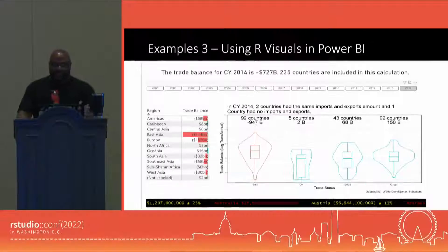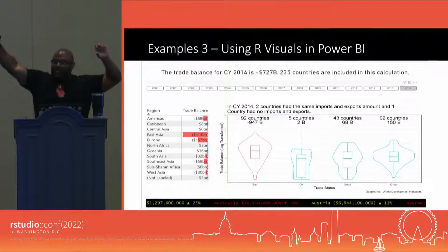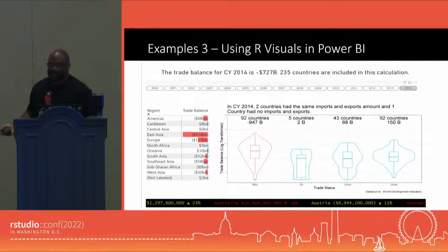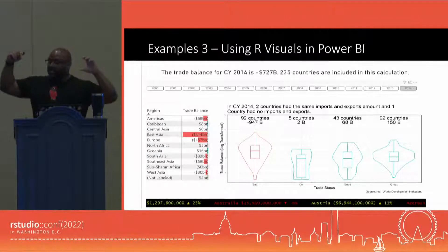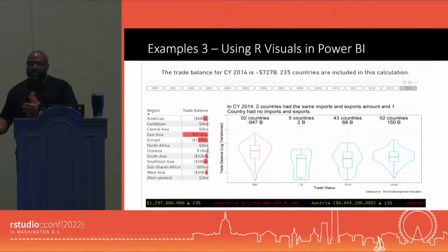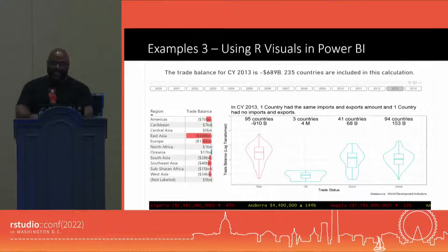One of those capabilities is the ability to have annotations inside of your graph. In this graph, if you were to add up all the different classes, the numbers don't add up to the total number of countries — 235 countries. I'm able to add information in my title about why that's the case. For each individual violin plot overlaid with a box plot, I'm able to give information about the number of countries in that particular class and the trade balance for that class. Those types of annotations the Power BI community is not aware of, and they make it super powerful. If you want to choose another year, you can pick a button and that filter will be propagated to your R visual.